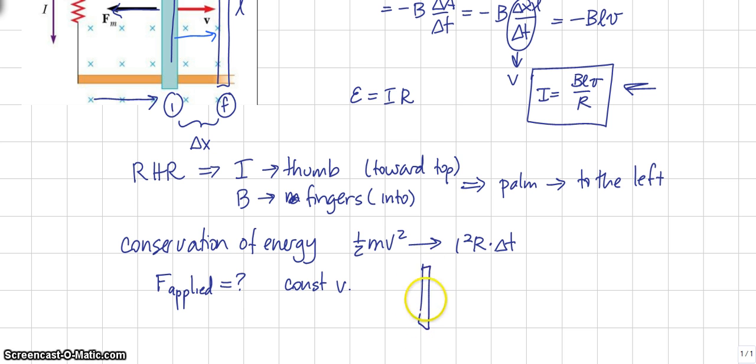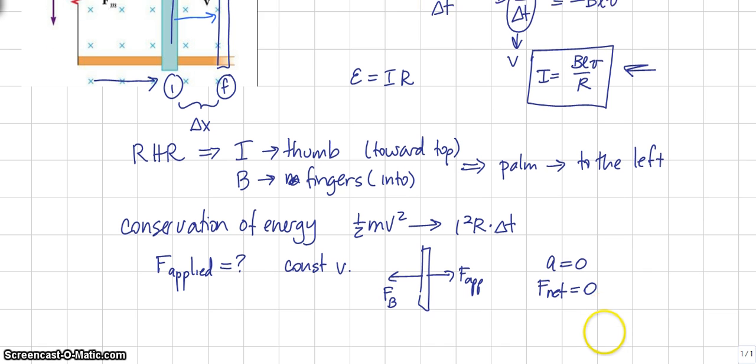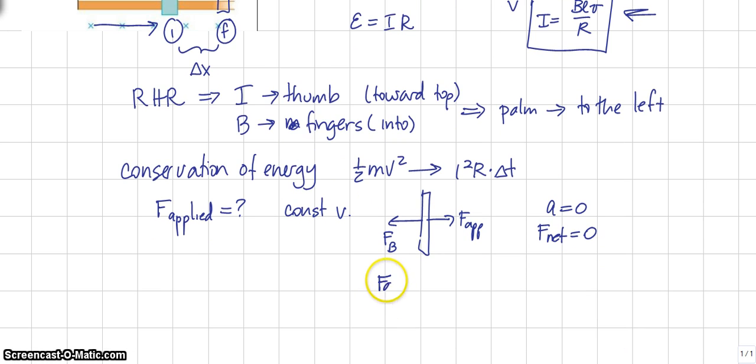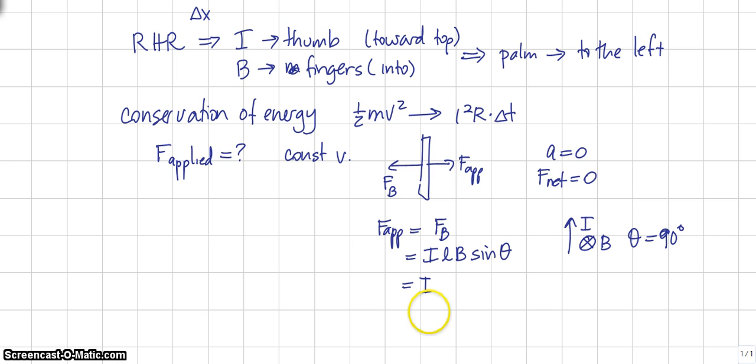Well, if you look at the bar, you have an applied force forward, and you have a magnetic force backward. And if the bar is moving at constant speed, the acceleration is zero, and so therefore, the net force is zero. If the net force is zero, that means the applied force forward must be equal to the magnetic force backward. And the magnetic force backward is ILB sine theta. Now, in this case, the current is upward, and the magnetic field is into the page, so theta is 90 degrees. So, the force is just I, the current that was developed in the bar, because it's moving, times L, the length of the bar, times the magnetic field B, through which the bar is moving.